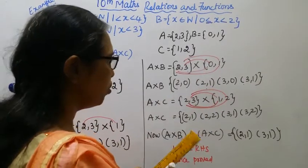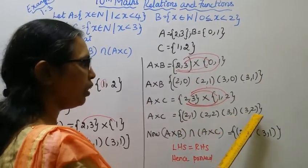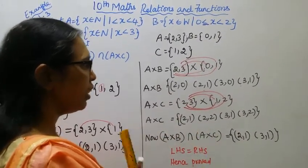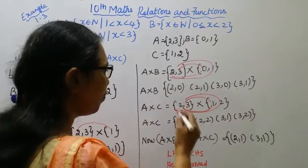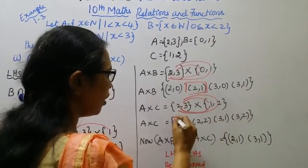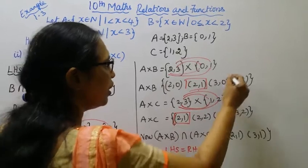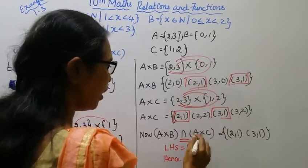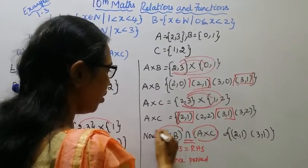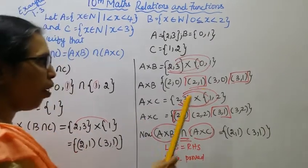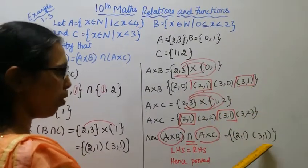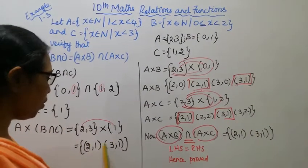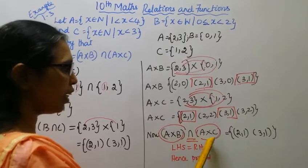Now A cross B intersection A cross C: the common elements are {(2,1), (3,1)}.